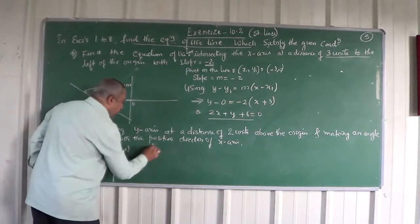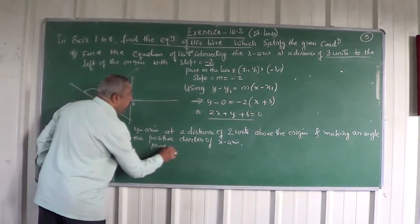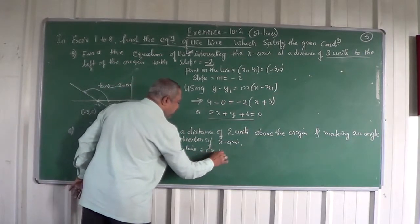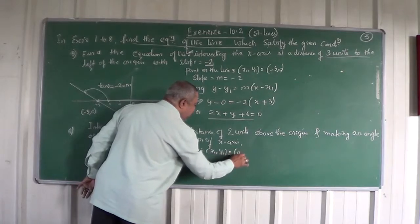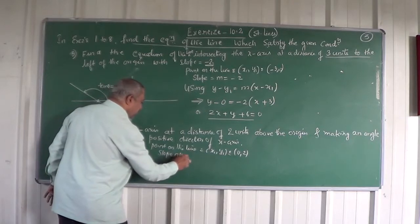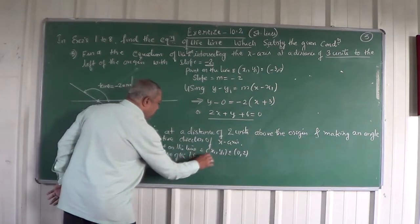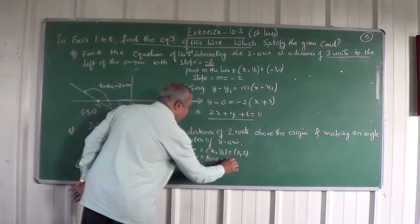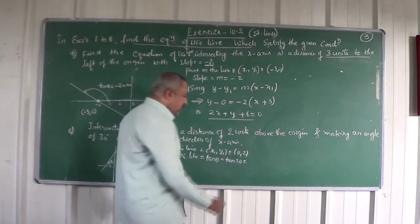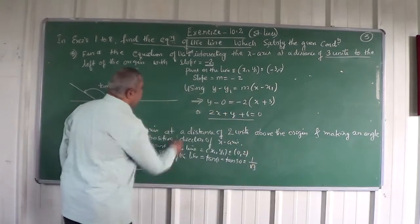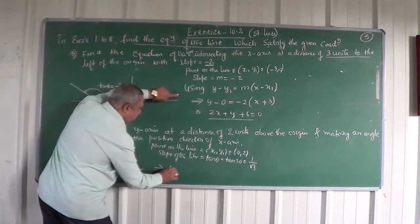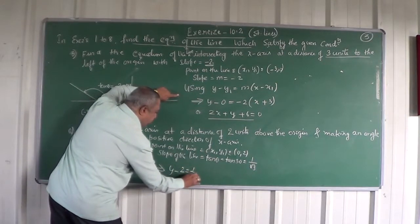Okay, so here, what is the point? Point on the line is x1, y1. In this case, what is the point? 0, 2. Then, slope of the line. What is the formula for slope? Tan theta. That is equal to tan 30. What is the value of tan 30? 1 by root 3. 1 by root 3.